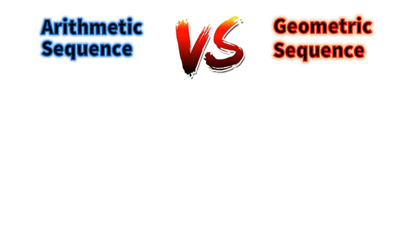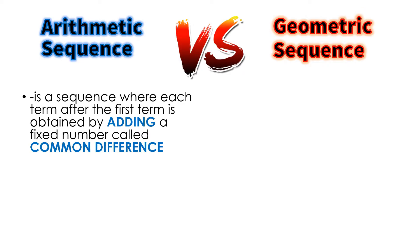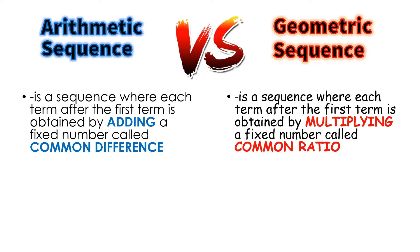The differences between the arithmetic sequence and geometric sequence are clearly stated under definitions. Arithmetic sequence is a sequence where each term after the first term is obtained by adding a fixed number called the common difference, while the geometric sequence is a sequence where each term after the first term is obtained by multiplying a fixed number called the common ratio.